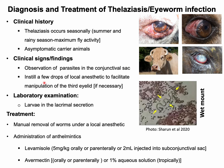Instillation of a few drops of local anesthetic may be necessary for manipulation of the third eyelid during examination. Laboratory confirmation includes examination of lacrimal secretion under the microscope, which will reveal eggs or larvae of the eyeworm. Treatment of telagiosis includes manual removal of worms followed by administration of anthelmintics such as levamisole or ivermectin, which are very effective.